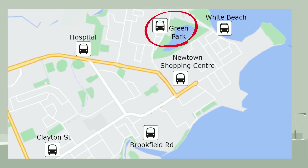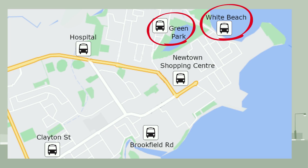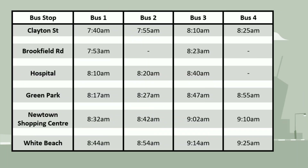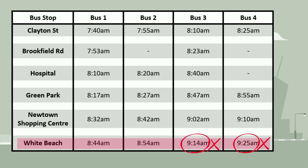Sometimes we might need to work in reverse. Let's say I'm at Green Park and I need to meet my friend at White Beach at 9 a.m. Let's look back at our timetable. Here are the times the different buses get into White Beach. Buses 3 and 4 get in after 9 a.m., so they won't work for me. Bus 2 looks good — it gets into White Beach at 8.54 a.m. Now I can use the timetable to work out what time bus 2 leaves Green Park. It will leave Green Park at 8.27 a.m.